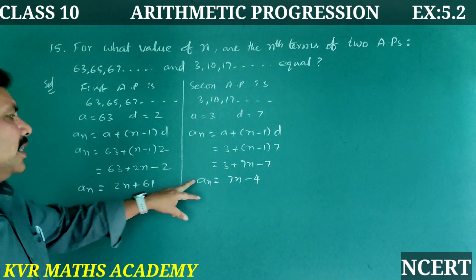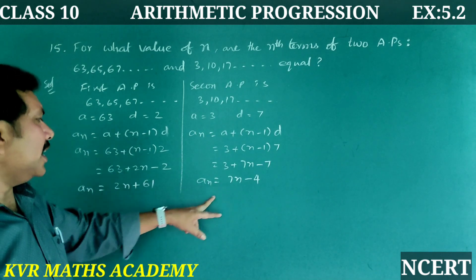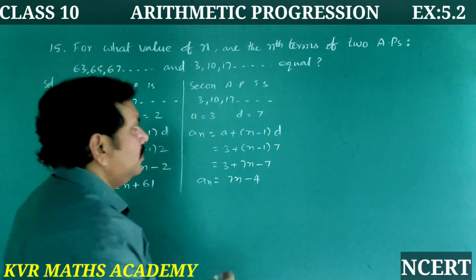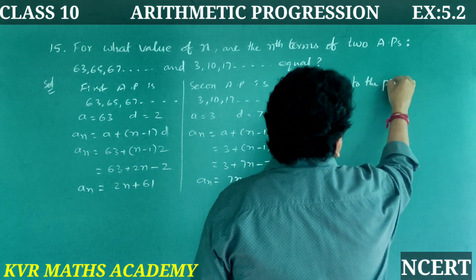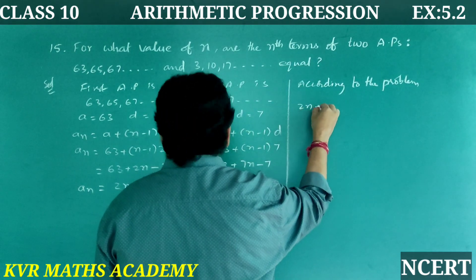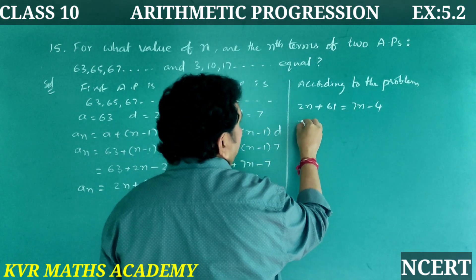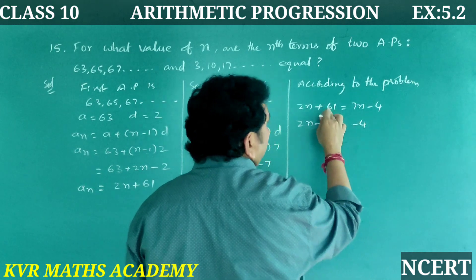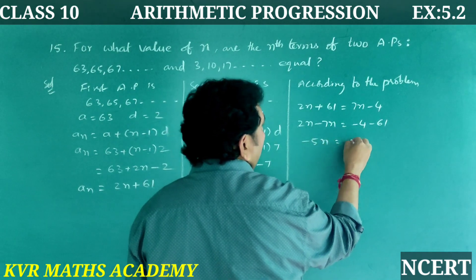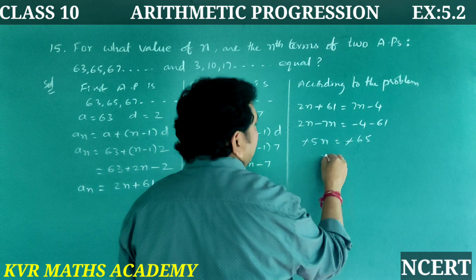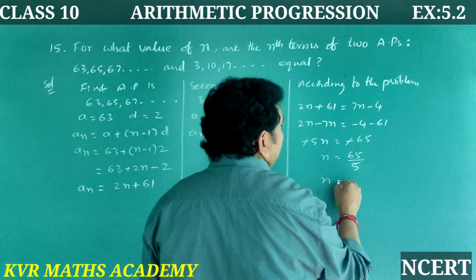According to the problem, both nth terms are equal: 2n + 61 = 7n − 4. Transferring terms: 2n − 7n = −4 − 61, so −5n = −65. The negatives cancel, giving n = 65 ÷ 5 = 13.